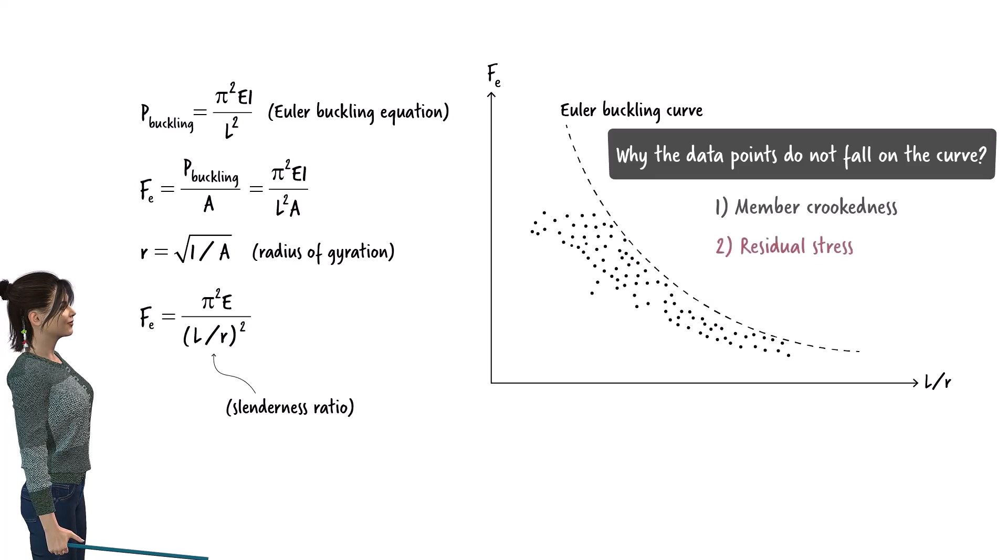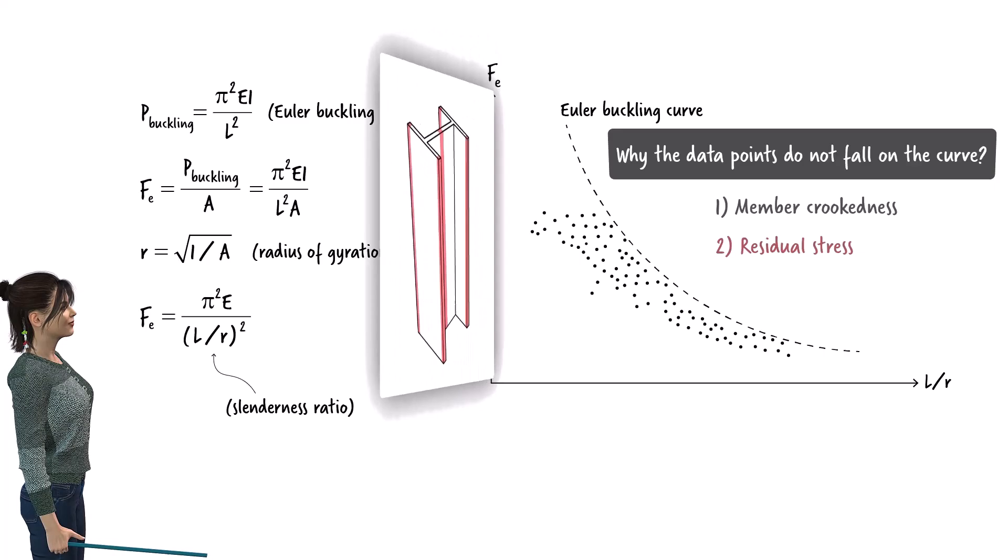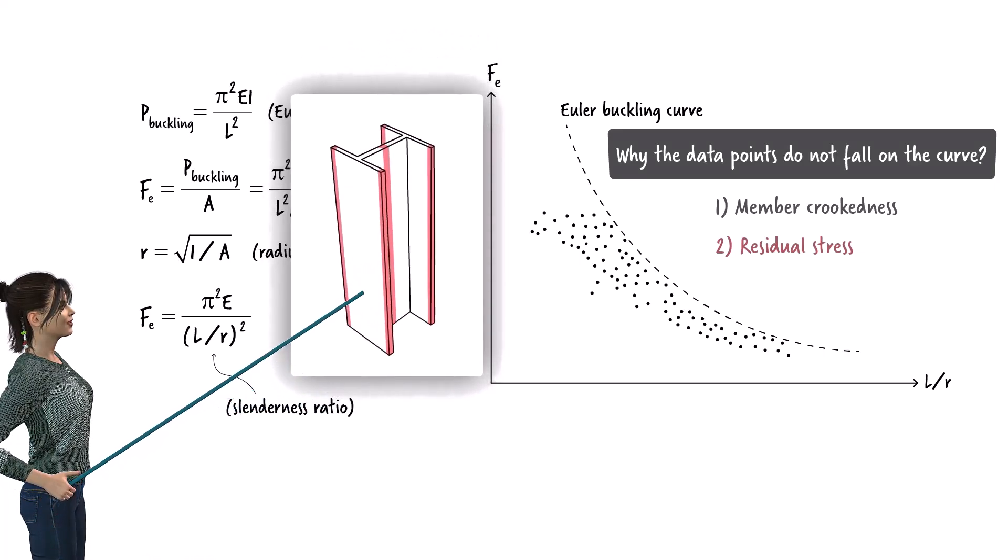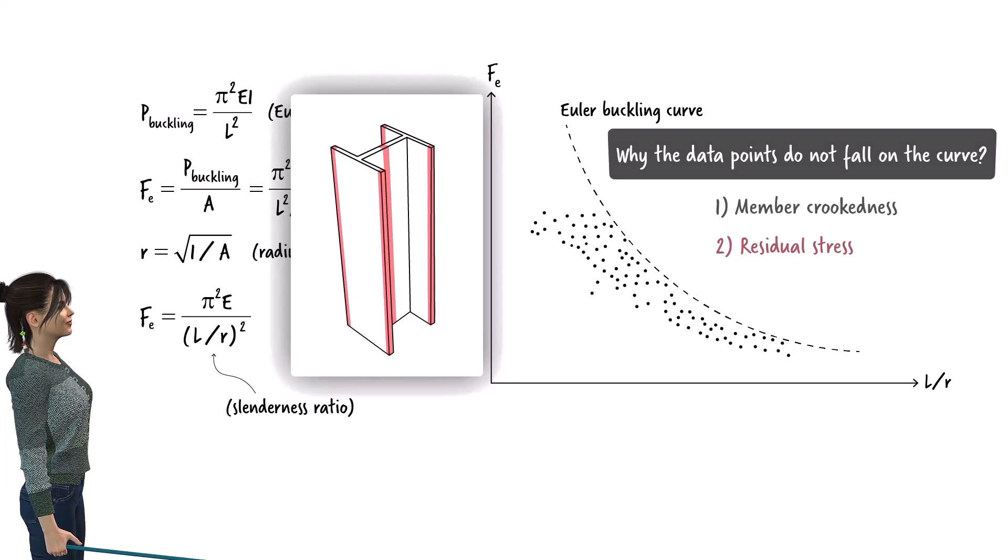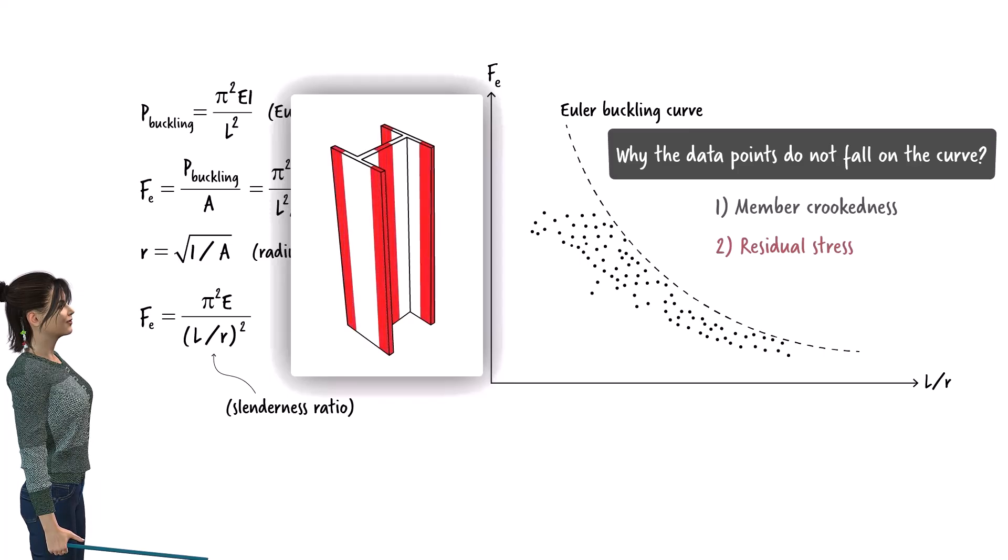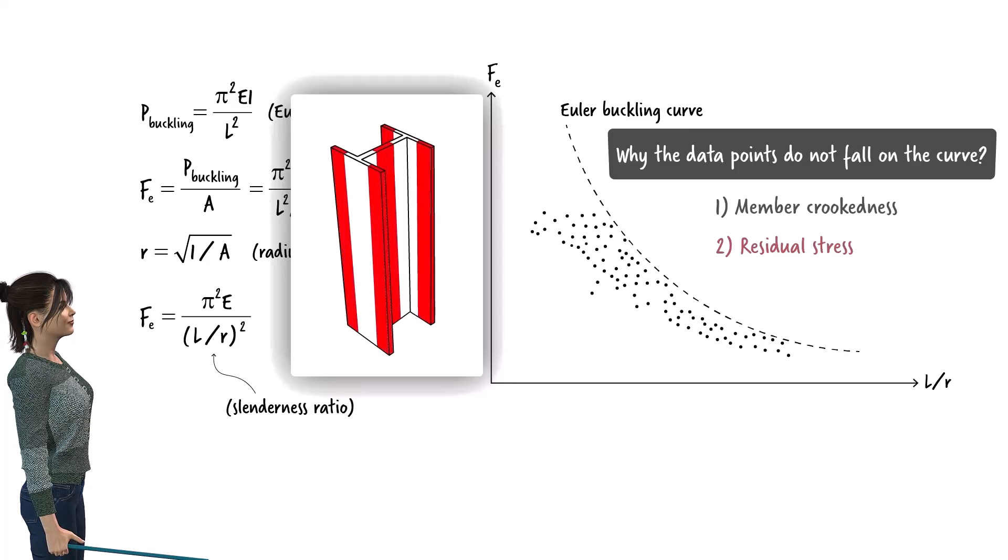Furthermore, steel members with standard sections embody residual stress, even when no load is present. For example, a standard I-shaped member has a residual stress profile like this. As we can see, the ends of the two flanges and the center of the web experience residual compressive stress. Consequently, compressive stress in these areas grows and spreads faster than the theory suggests, causing the member to buckle well below the value given by the Euler equation.